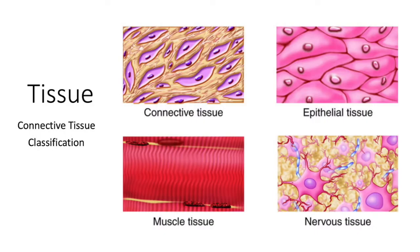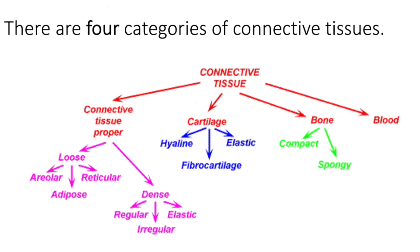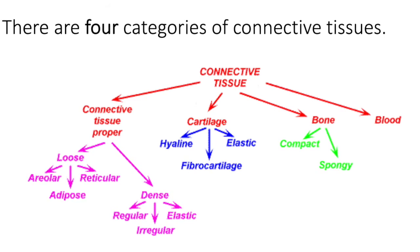Like we did for epithelial tissue, we're going to go through each of the connective tissues and talk about the structure, location, and function. Be sure you are able to identify the tissue when you see it. Recall that connective tissue is further subcategorized into four categories: connective tissue proper, cartilage, bone, and blood. On this page, we're going to look at connective tissue proper.